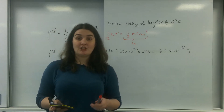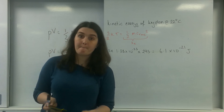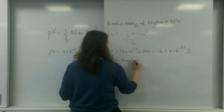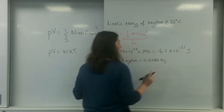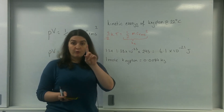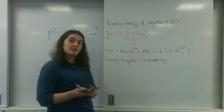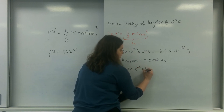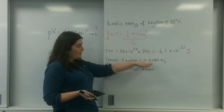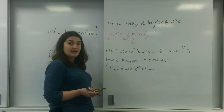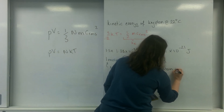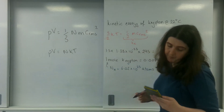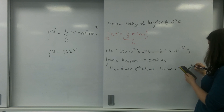So this is how much kinetic energy one atom of krypton has. Let's go a little bit further. If I know that one mole of krypton is 0.0084 kilograms, and in that one mole I have Avogadro's constant worth — 6.02 times 10 to the 23 atoms — I can work out how much one atom of krypton is: 0.0084 divided by 6.02 times 10 to the 23, which is 1.4 times 10 to the minus 26 kilograms.